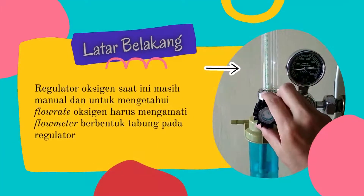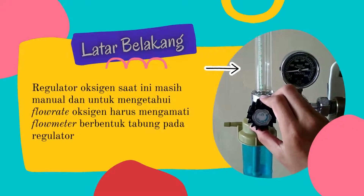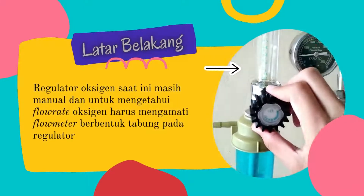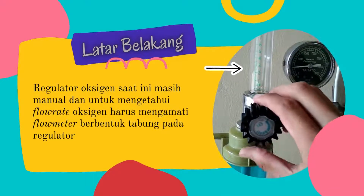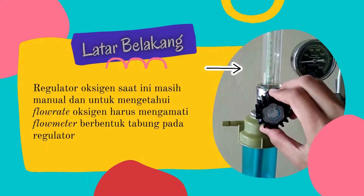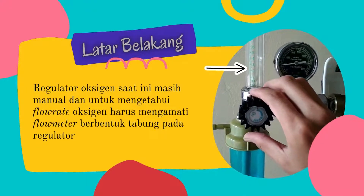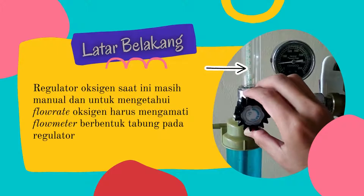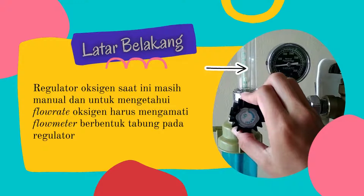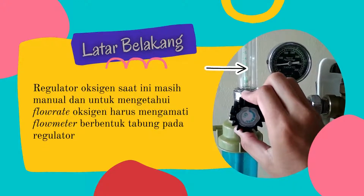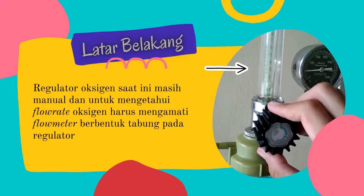Latar belakang: Regulator oxygen yang terdapat di fasilitas kesehatan saat ini masih manual, sehingga untuk mengetahui laju aliran oxygen harus mengamati flowmeter raksa berbentuk tabung pada regulator. Selain itu, untuk mengatur besar kecil volume oxygen yang disalurkan ke pasien juga dilakukan secara manual dengan memutar katup pada regulator oxygen. Maka dibutuhkan tenaga medis yang paham dalam mengatur buka tutup katup regulator dan memastikan volume oxygen yang diberikan pada pasien.